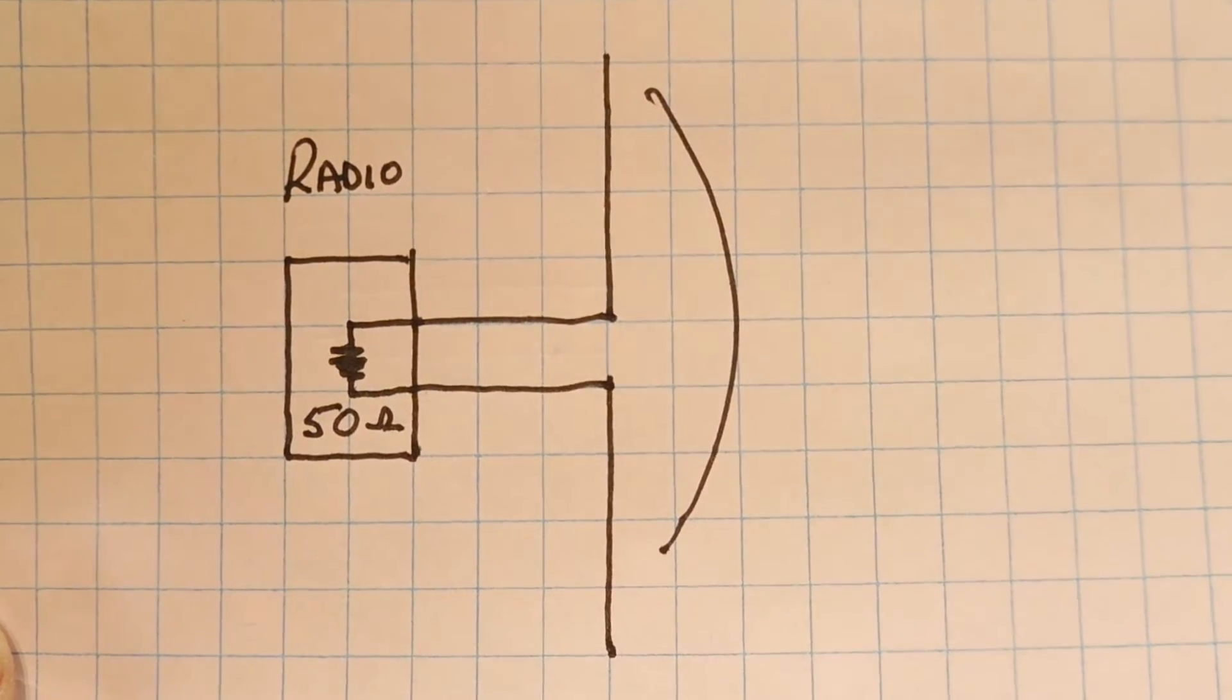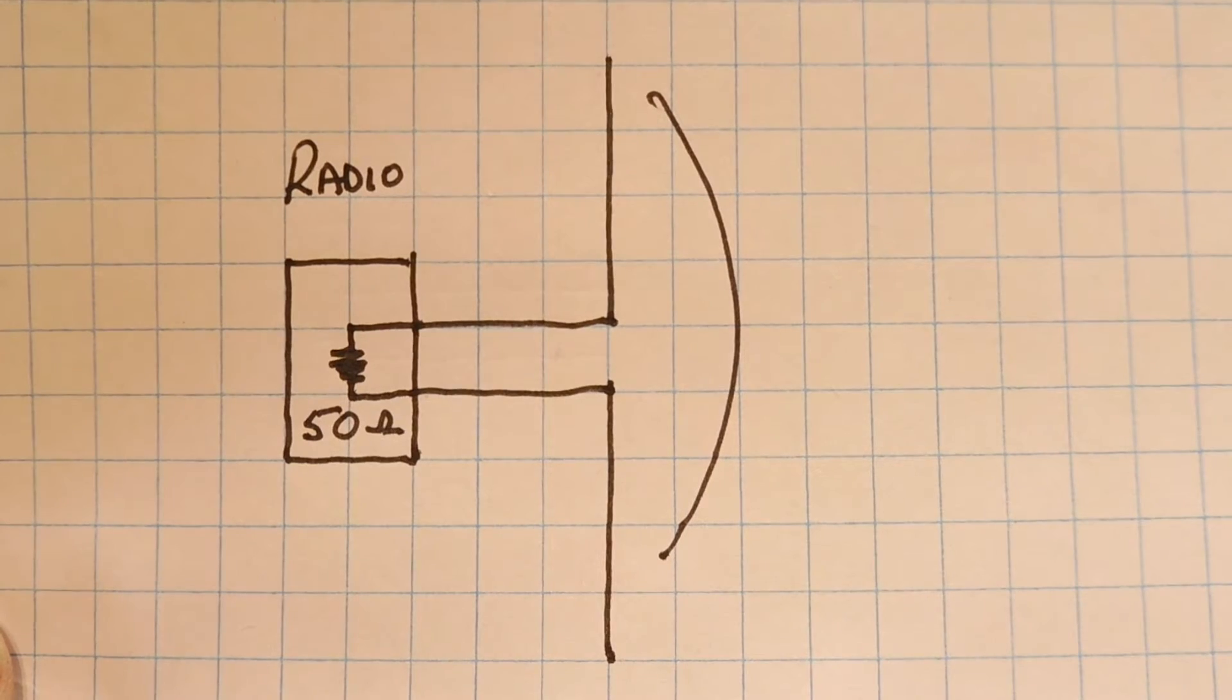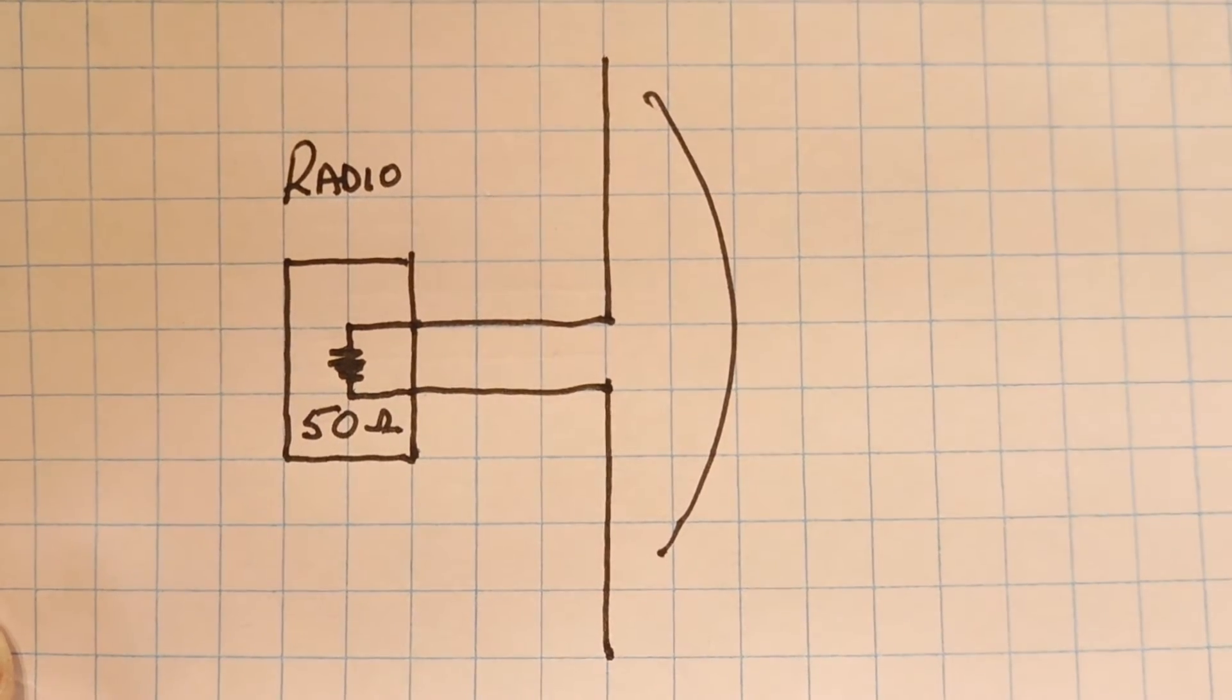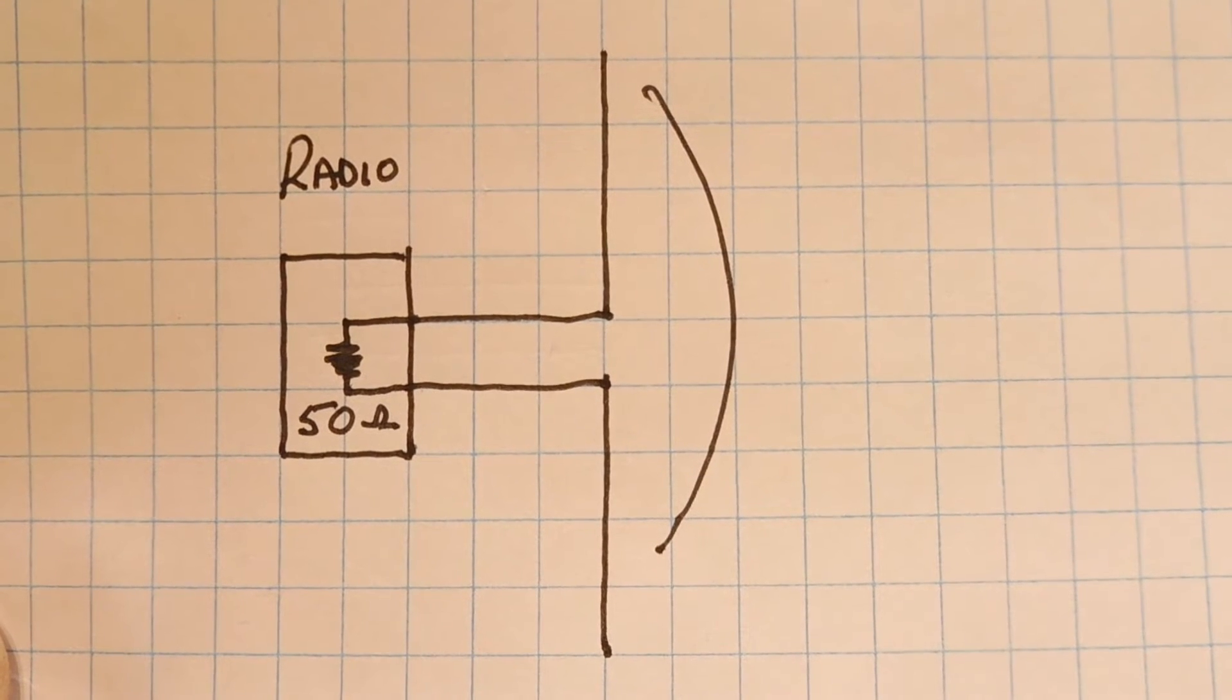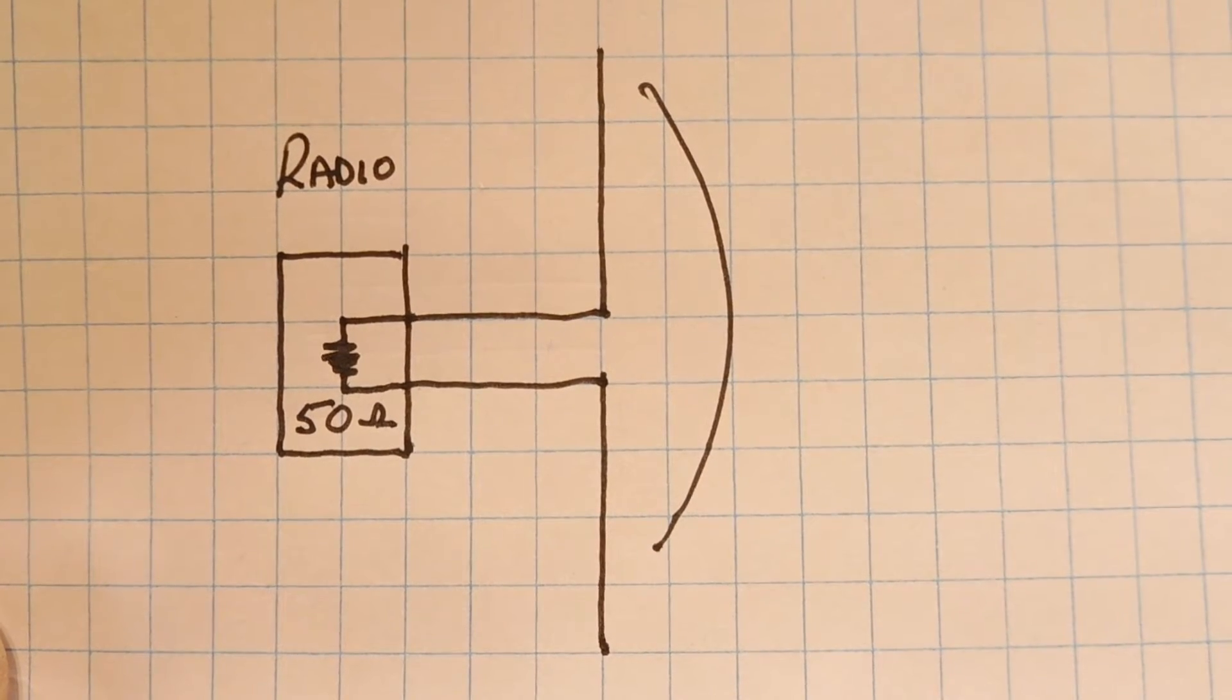Now if an antenna can receive, it can also transmit, it's a reciprocal system. So the radio can send out RF energy at the correct frequency into the antenna, and the antenna will radiate RF energy into free space.